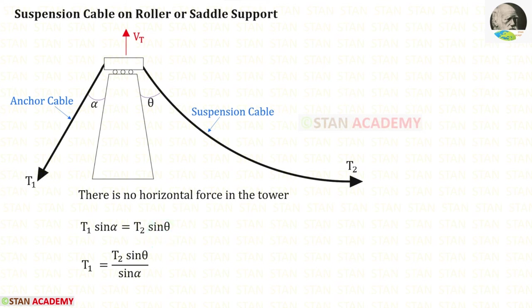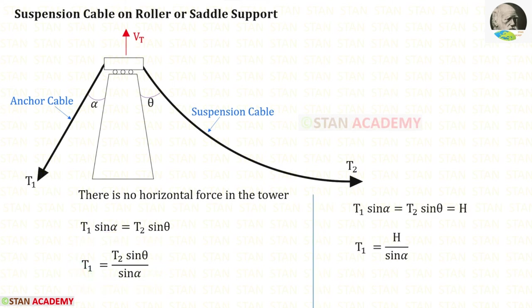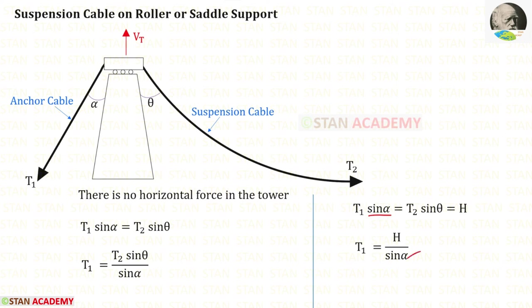Let us take sin alpha on the other side so that we will get T1. Alternatively, we can make another expression for T1. We know that T2 sin theta is the horizontal thrust H. In this case, we can take sin alpha on the right side so it will come in the denominator. This is another expression for T1.